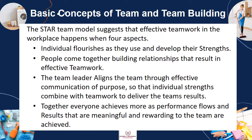The STAR team model suggests that effective teamwork in the workplace happens when four aspects are present: individuals flourish as they use and develop their strengths; people come together building relationships that result in effective teamwork; the team leader aligns the team through effective communication of purpose so that individual strengths combine with the teamwork to deliver the team's results; and together, everyone achieves more as performance flows and results that are meaningful and rewarding to the team are achieved.